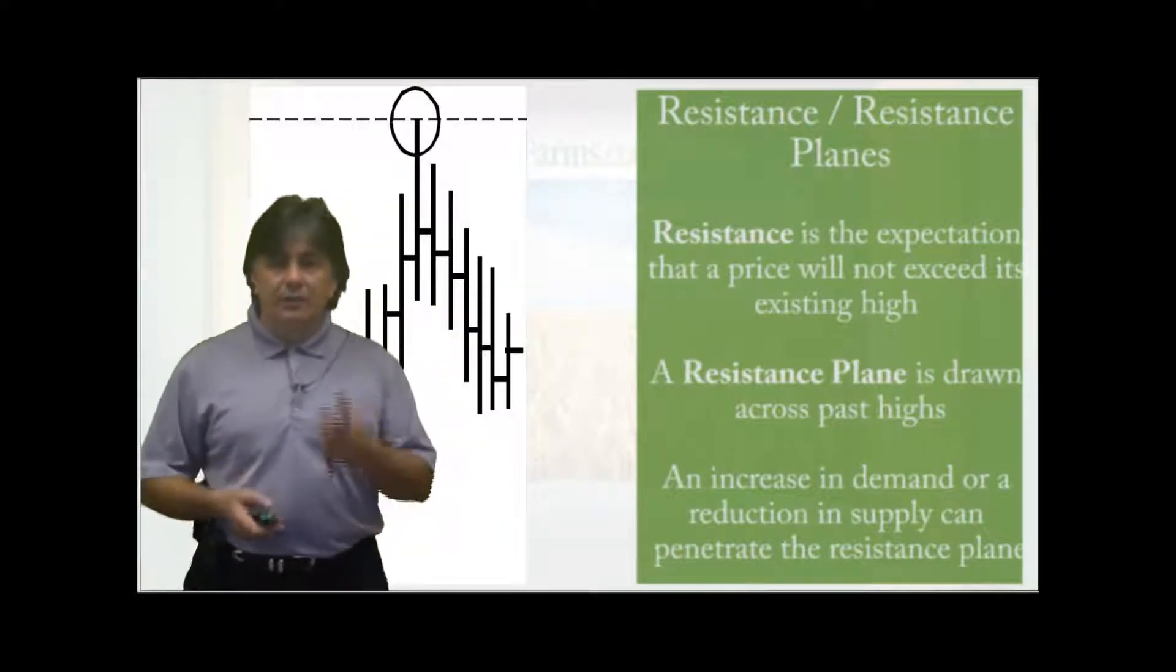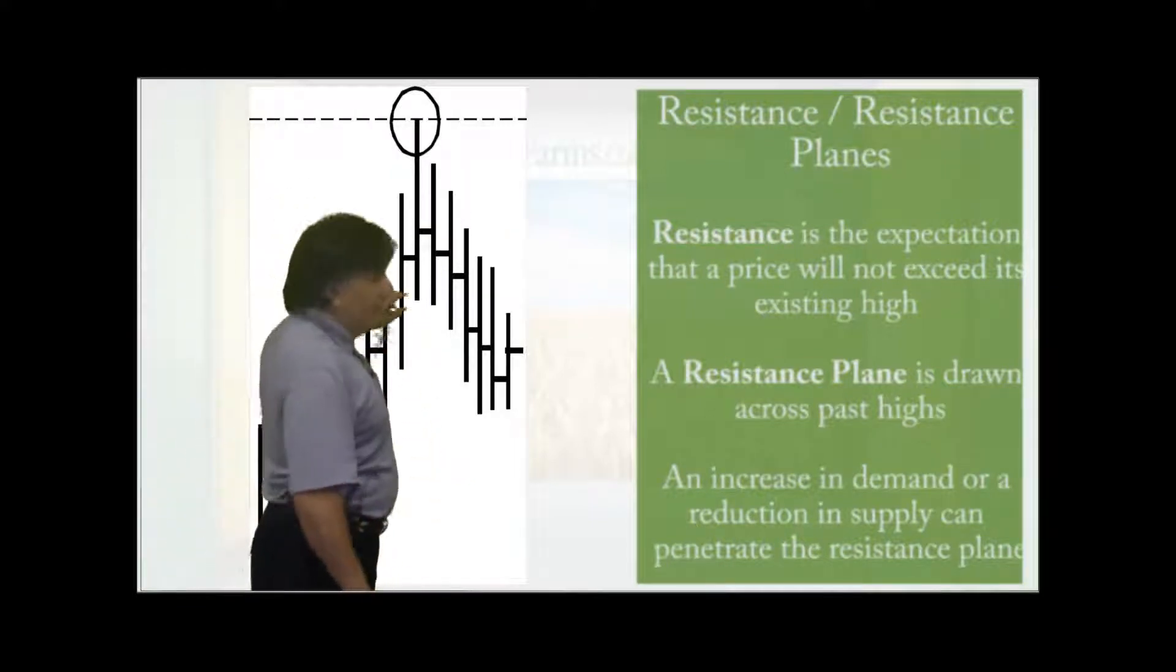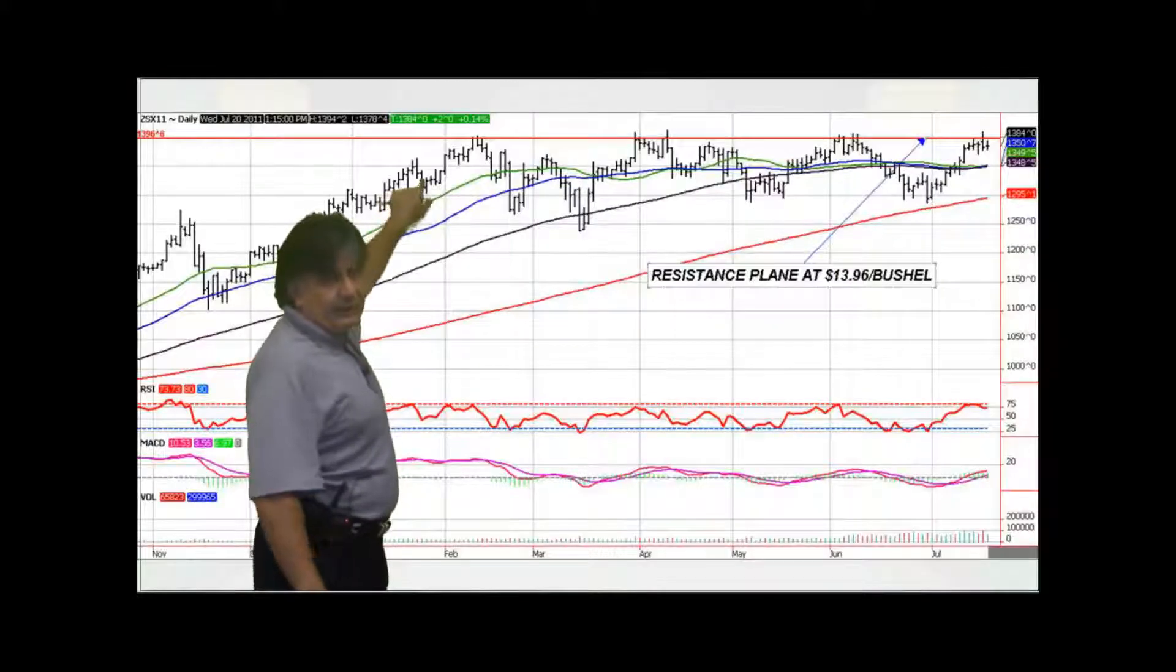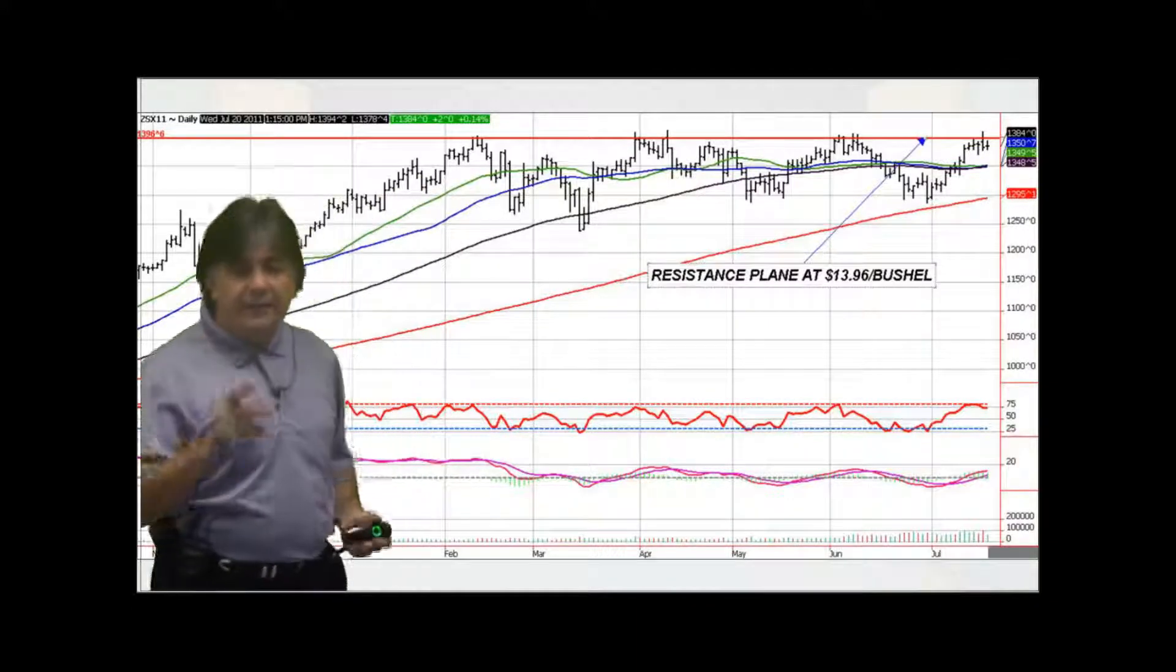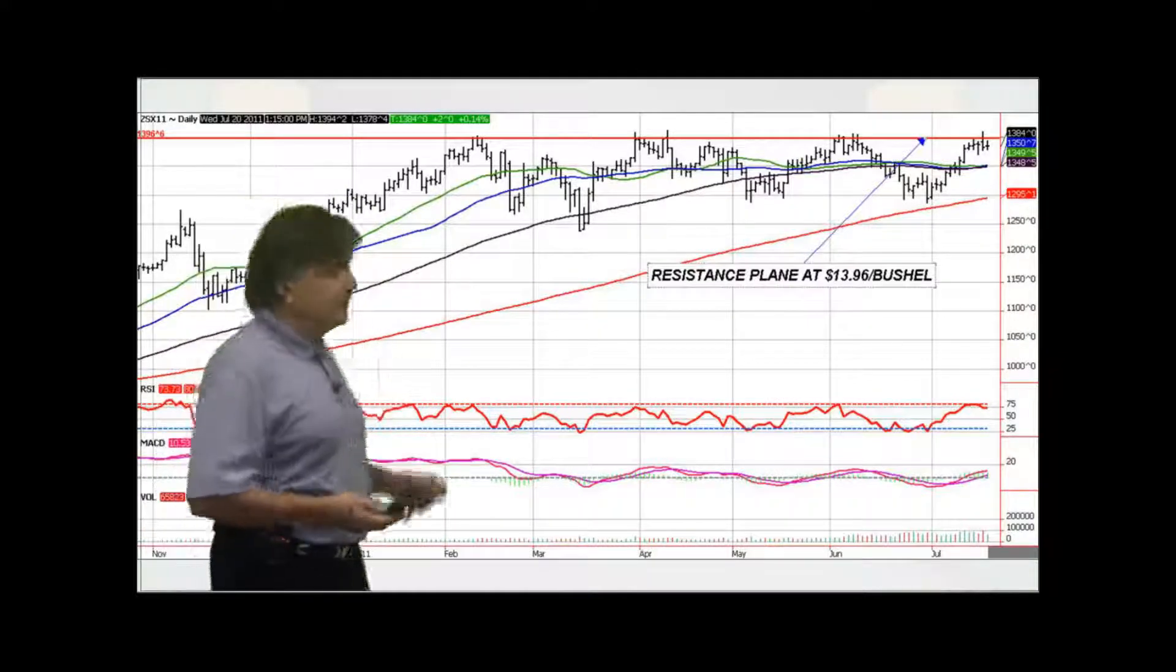So let's start off with resistance. You can see from this image here, the market's trending higher and then it hits a resistance plane. You draw a line for resistance plane, that's your resistance, that little point there. An increase in demand or reduction in supply can penetrate that resistance plane.